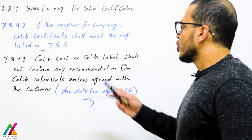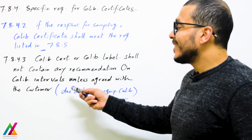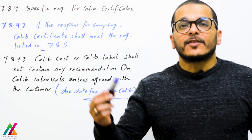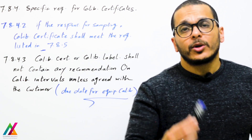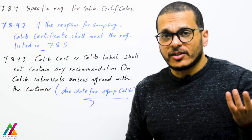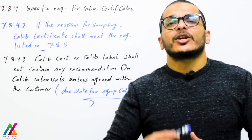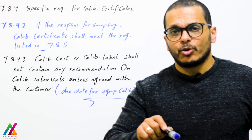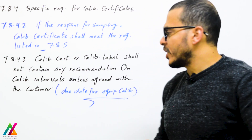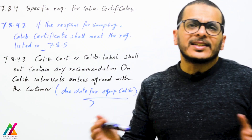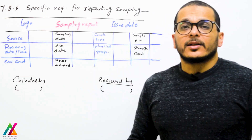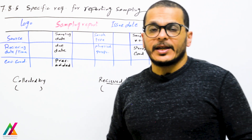The last point: a calibration certificate or calibration label shall not contain any recommendation on calibration intervals unless agreed with the customer. After the calibration lab calibrates your equipment — a balance, micropipette, or whatever equipment — they will send a calibration certificate and calibration label. On the calibration label they cannot mention the due date for the next calibration, for example after one year or two years, unless agreed with the customer. It is good practice to add the due date on the calibration label.